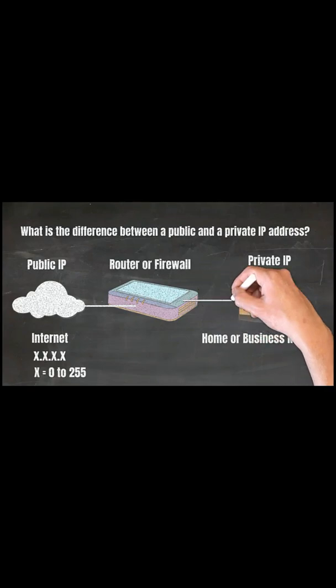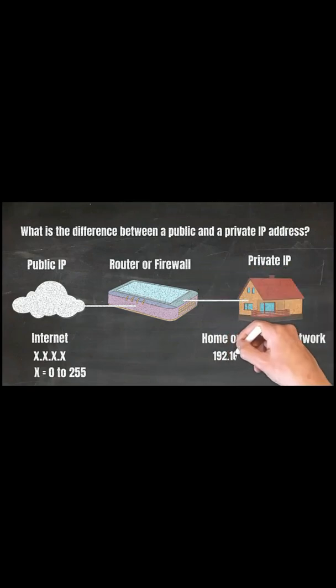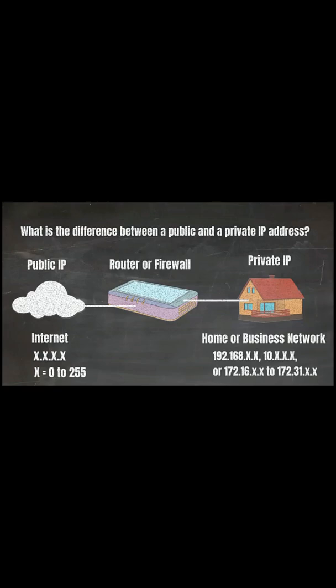What happens is the router or the firewall will assign an IP address to an internal LAN workstation. So whether it's in your home or your business, the router might appear to be one IP address to the world, but it's actually serving every machine or device on that network.